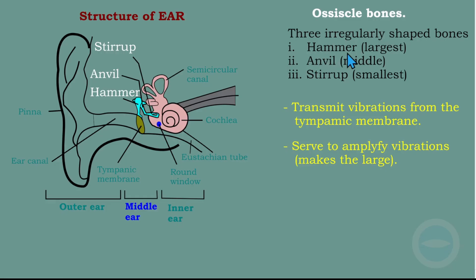The ossicles achieve amplification because the hammer, which is the largest, transmits vibration to the anvil, which is smaller. As the vibration hits the anvil, it becomes larger because the volumes of the hammer and anvil are not equal. Then the stirrup, which is the smallest, amplifies the vibration again. They move from the larger size to the smallest size, and the vibration increases from smaller to larger. These are the functions of the ossicle bones.